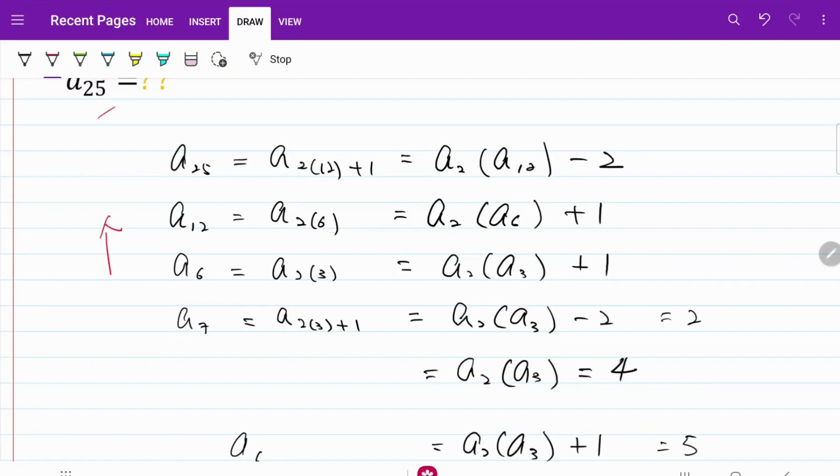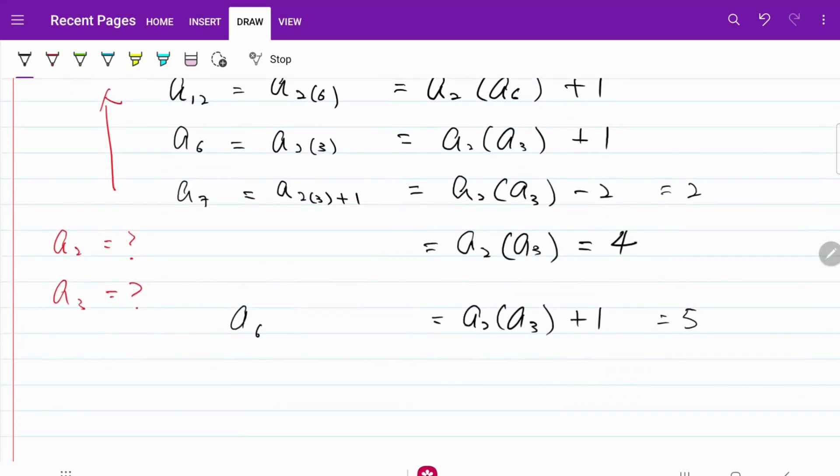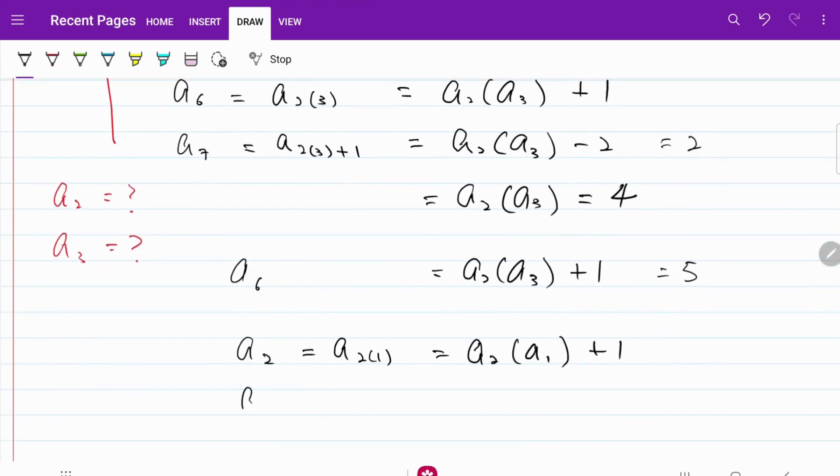In order to work backwards to get A25, I need to find what is the individual value of A2 and A3. So let me deconstruct each of the components using the formula. I have A2 = A2 multiplied by A1 + 1. Likewise, A3 can be expressed as A2(1) + 1, which is then equal to A2 multiplied by A1 - 2. Let me call this equation 1, and let me call this equation 2.